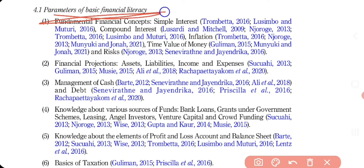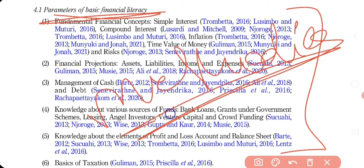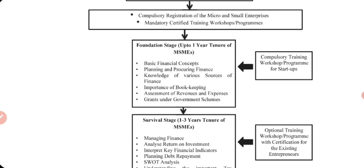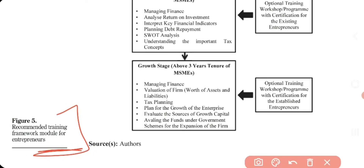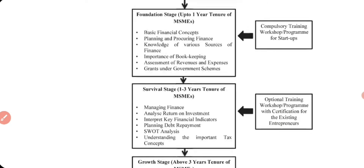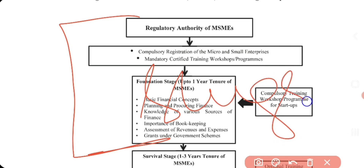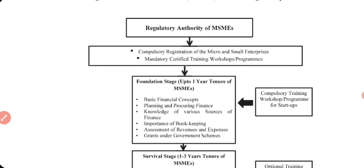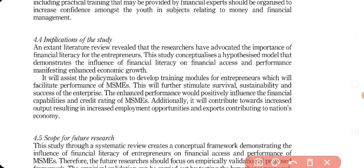I summarized the various methodologies used by authors across the globe. I also proposed a suggestive model — a recommended training framework module for entrepreneurs showing how financial literacy can be improved. This concrete suggestion is very catchy for an editor or reviewer as it adds something new to the study.